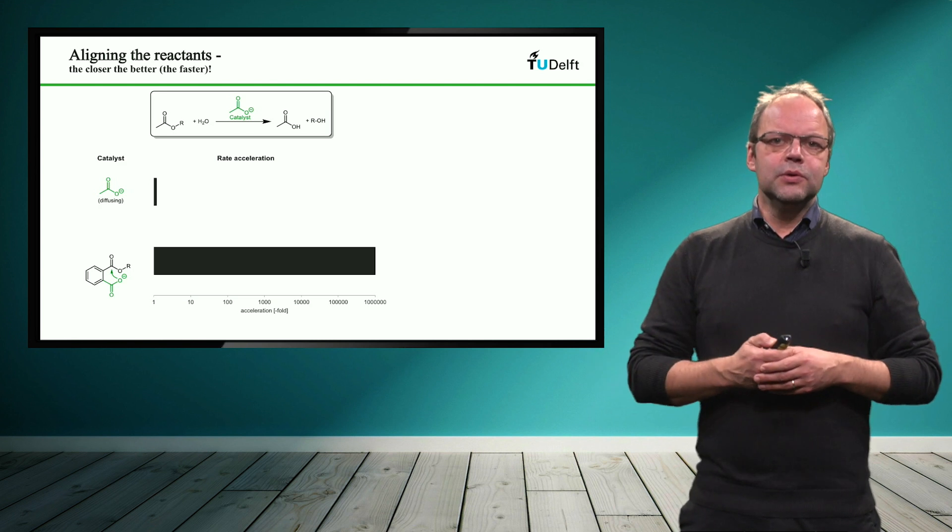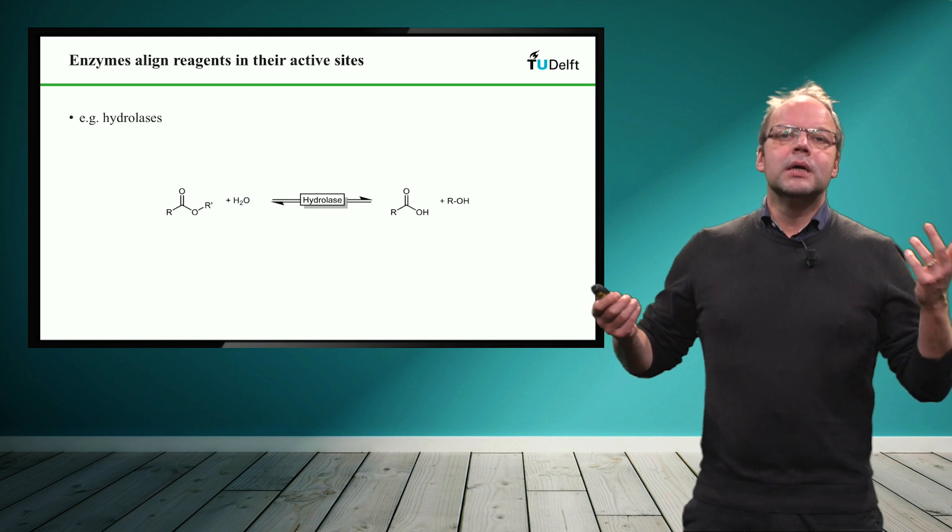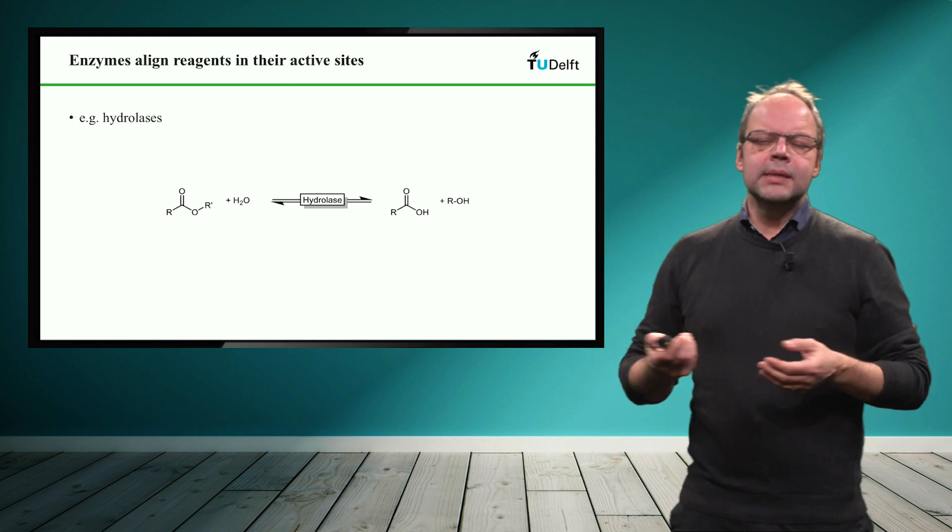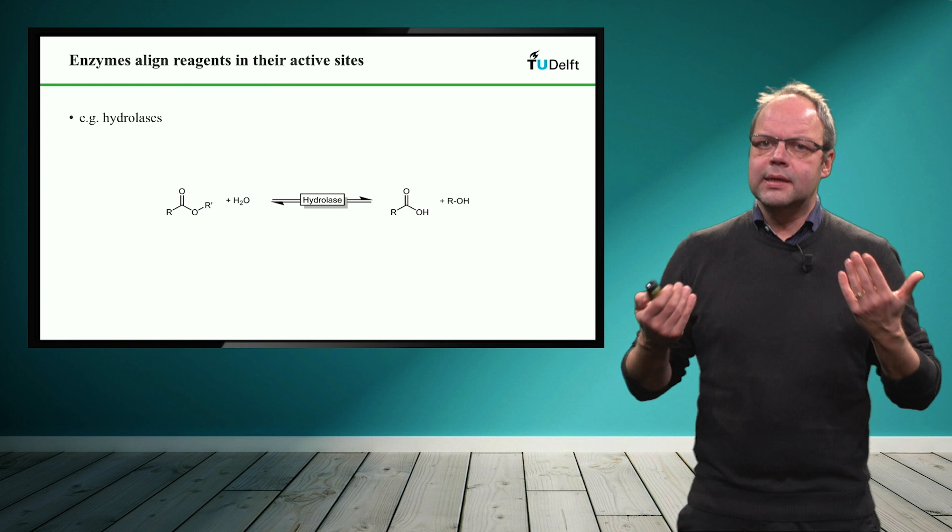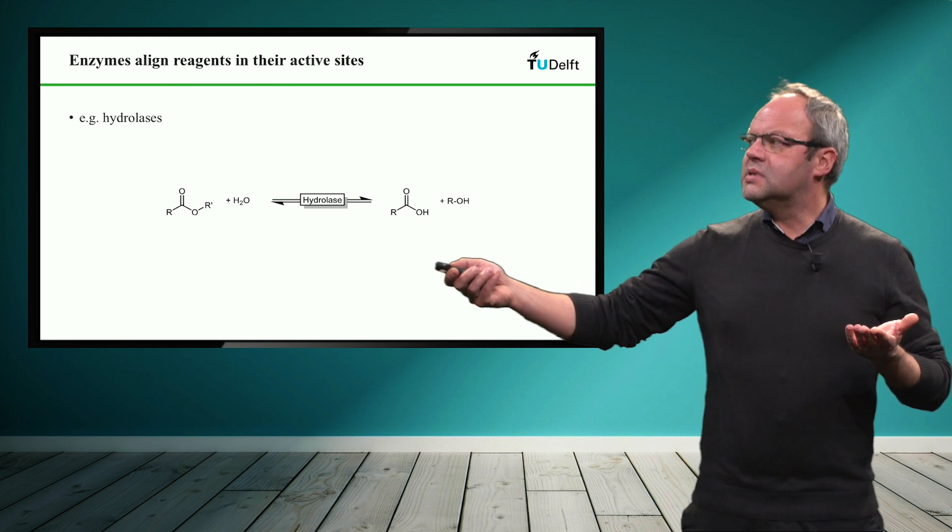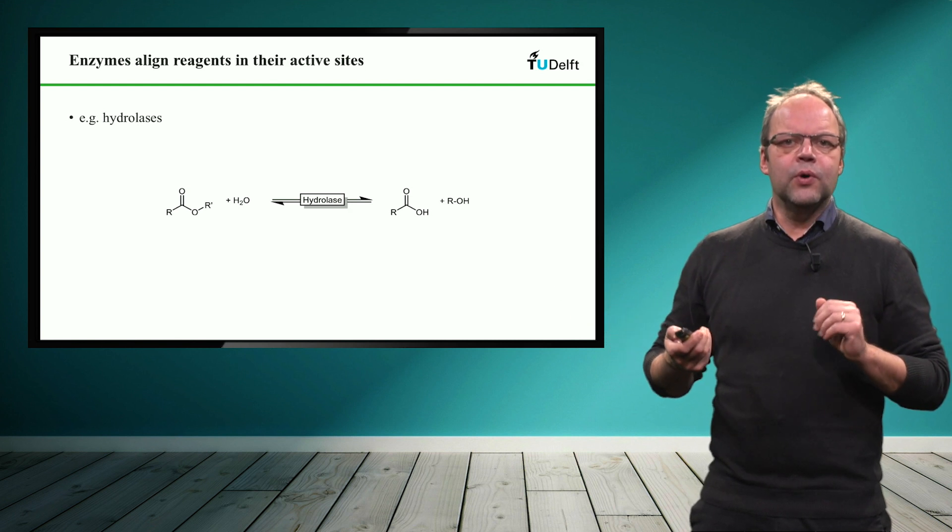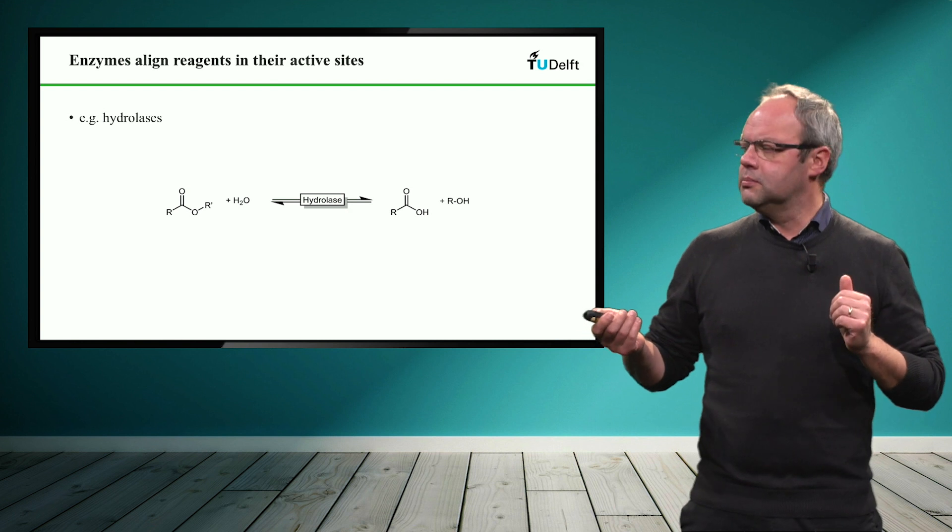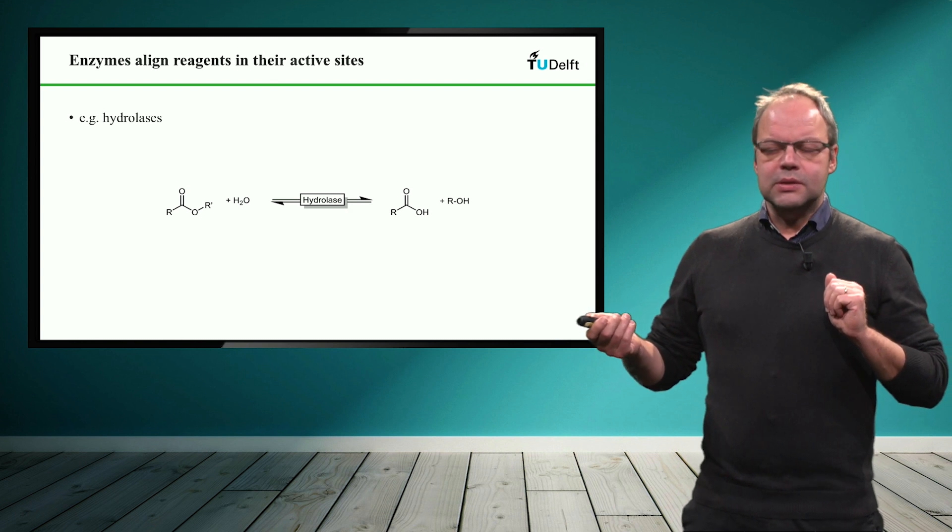And I want to discuss with you the example of the so-called serine hydrolases, simply because these enzymes have been investigated in great detail already some decades ago. So what these enzymes do is they basically catalyze the same reaction that we have discussed before. They hydrolyze esters into acids and alcohols. But how do these enzymes do this reaction?